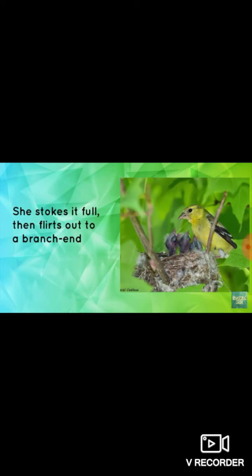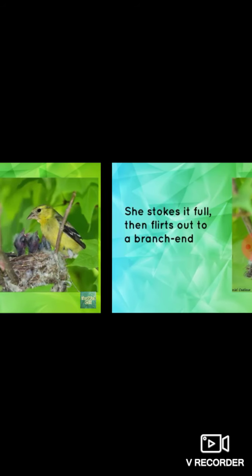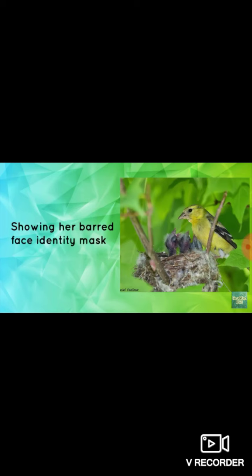Thereafter, in the next para: 'she strokes it full, then flirts out to a branch end.' The food which the goldfinch brought for her young ones, she feeds them to their fill, then flirts out to a branch end. Feeding the young ones to their fill, the goldfinch comes to the end of the branch, showing her barred face identity mark. Goldfinch has certain bars — black color stripes on her body. After feeding the young ones, she comes to the end of the branch and shows her barred face, which is her identity.